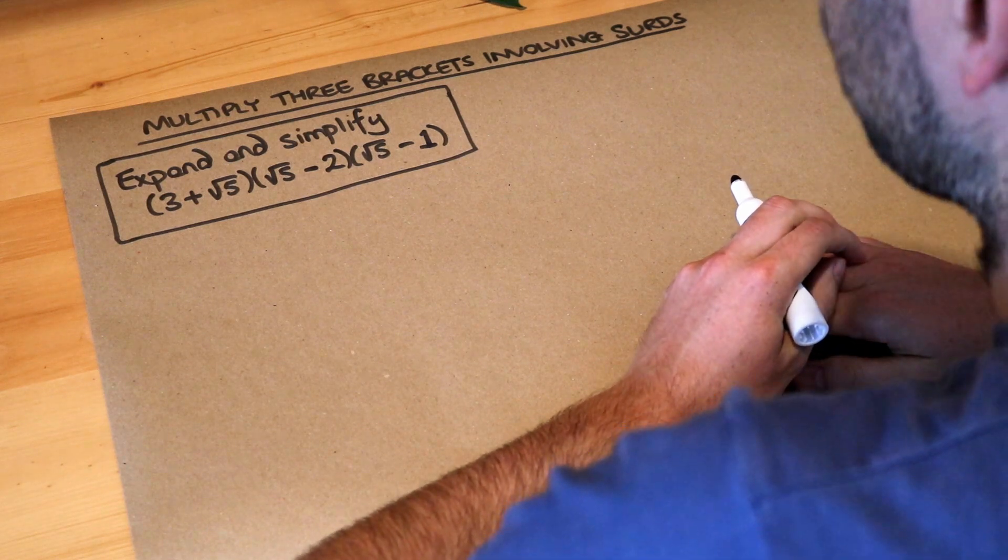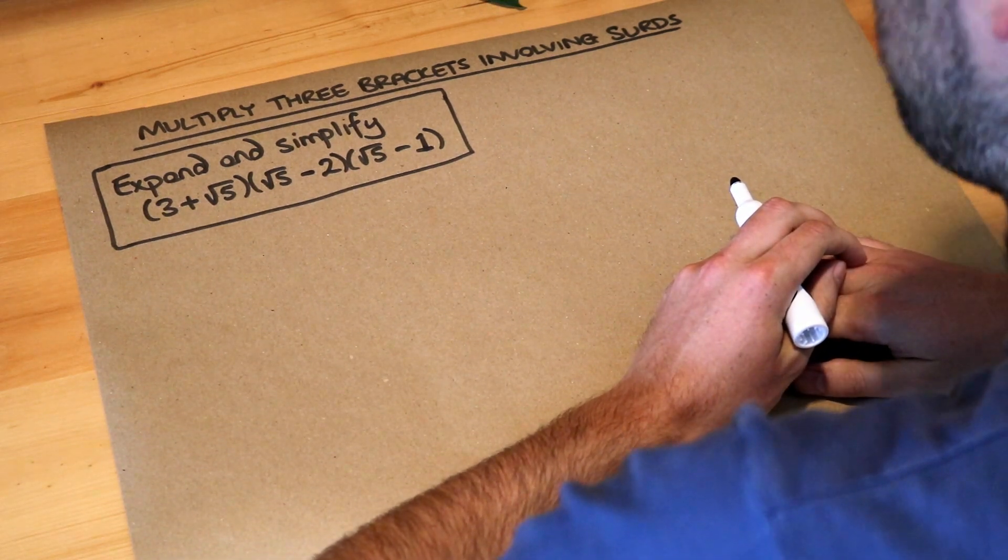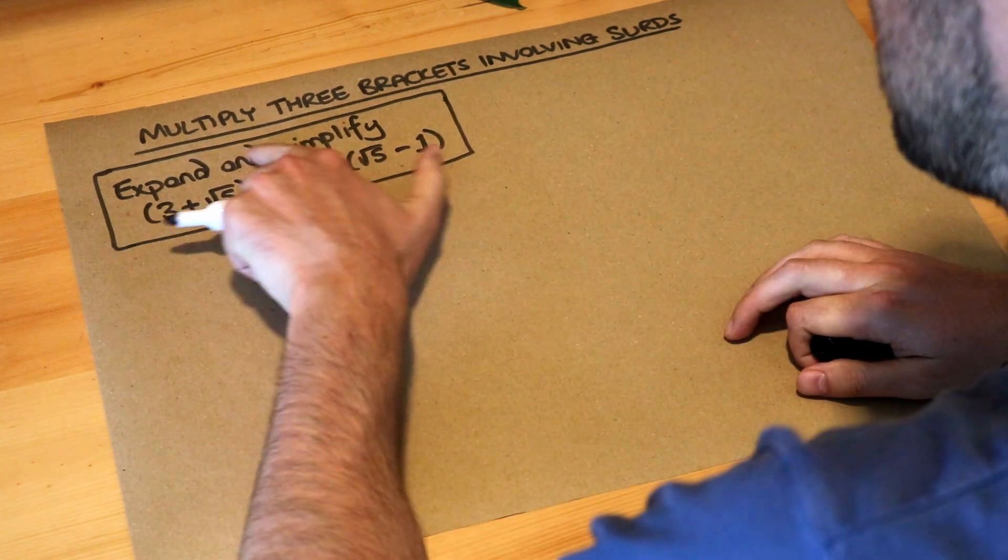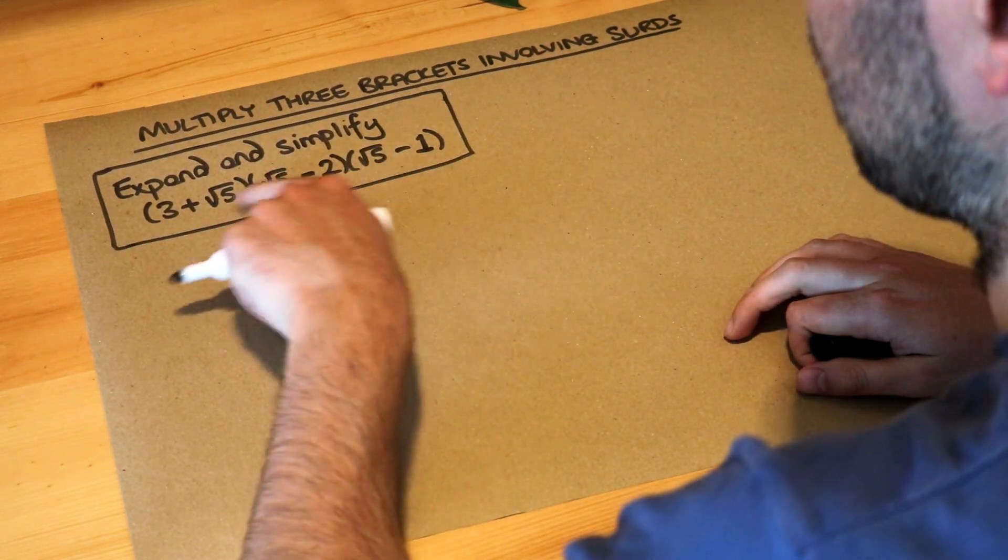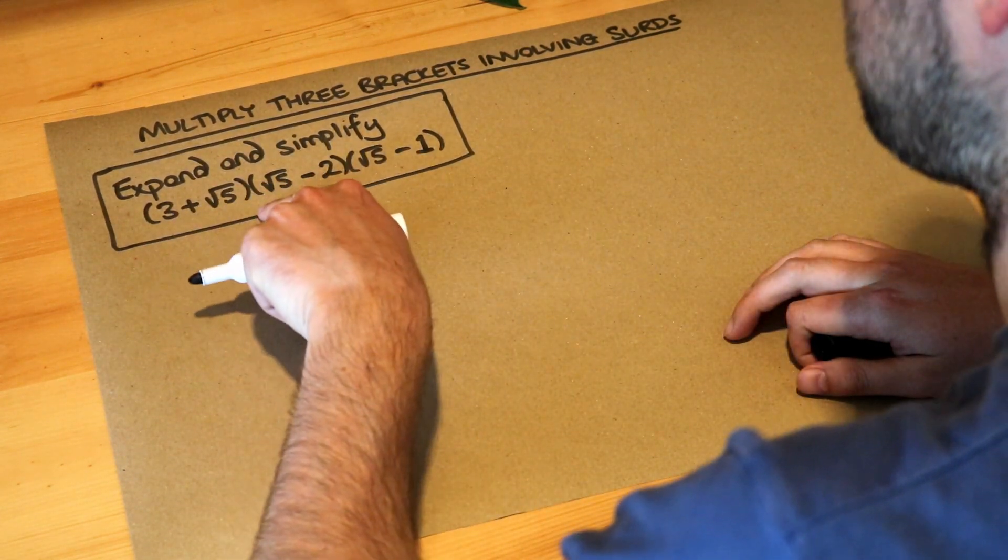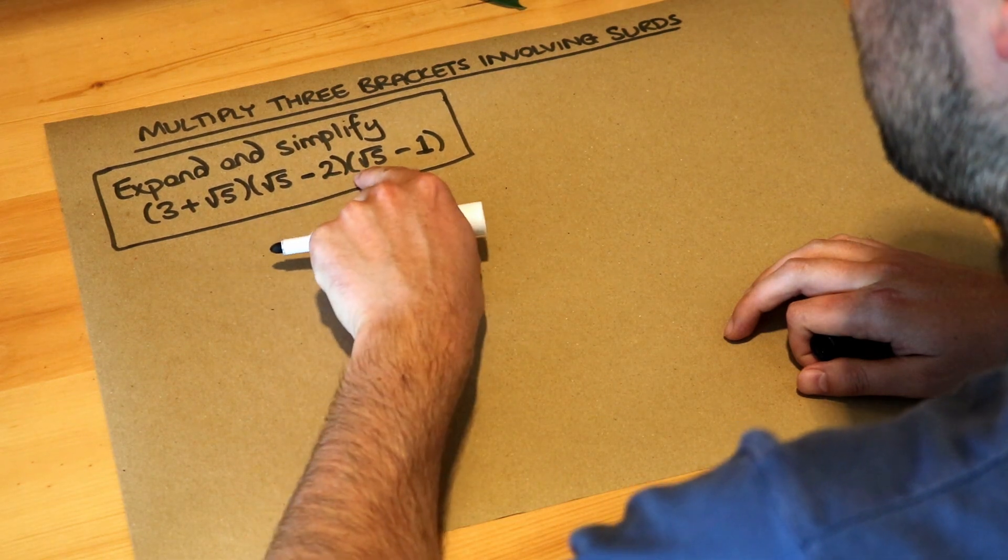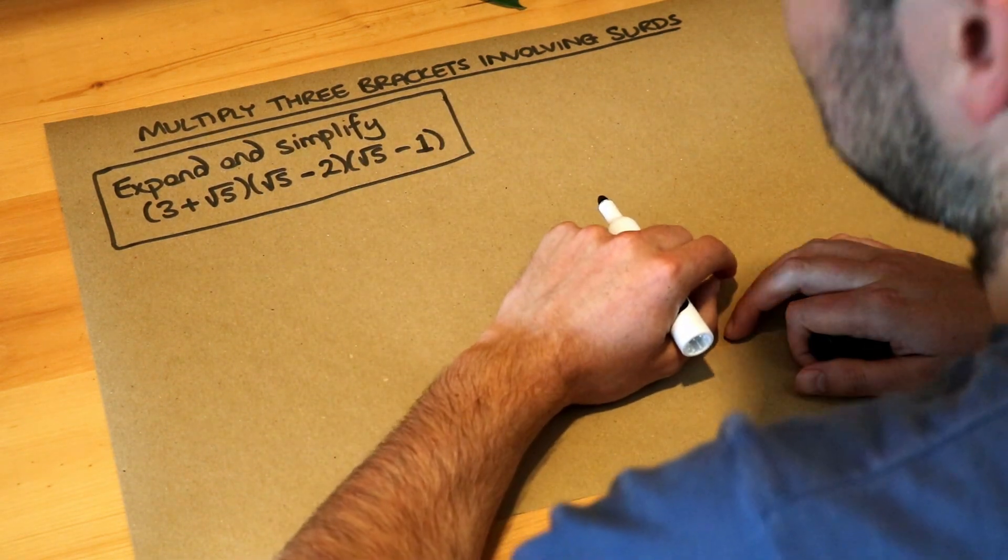Hello and welcome to this video on multiplying three brackets involving surds. We want to expand and simplify this expression: (3 + √5) times (√5 - 2) times (√5 - 1).